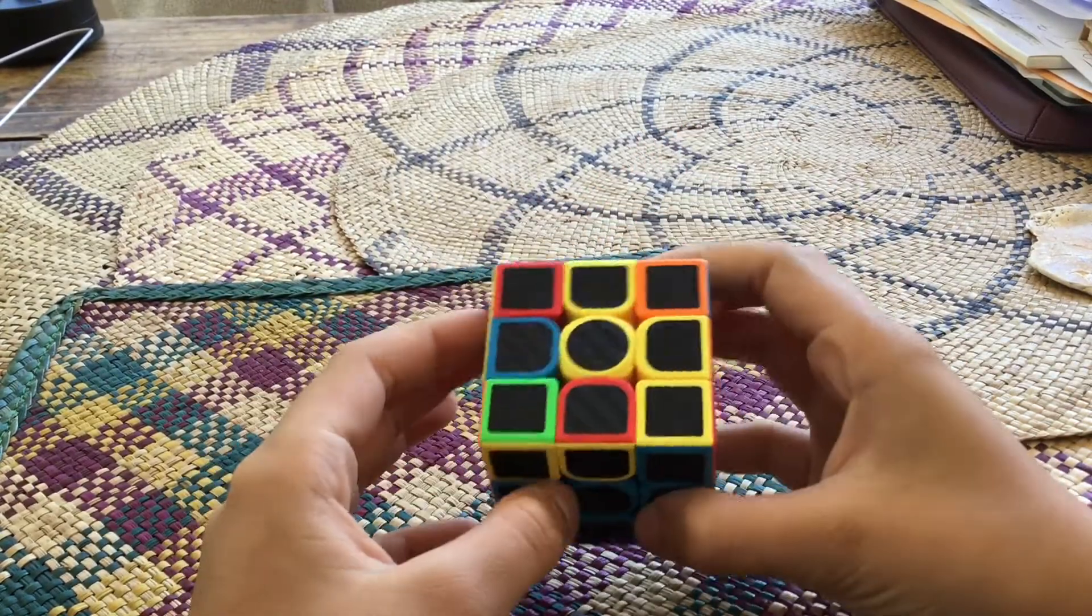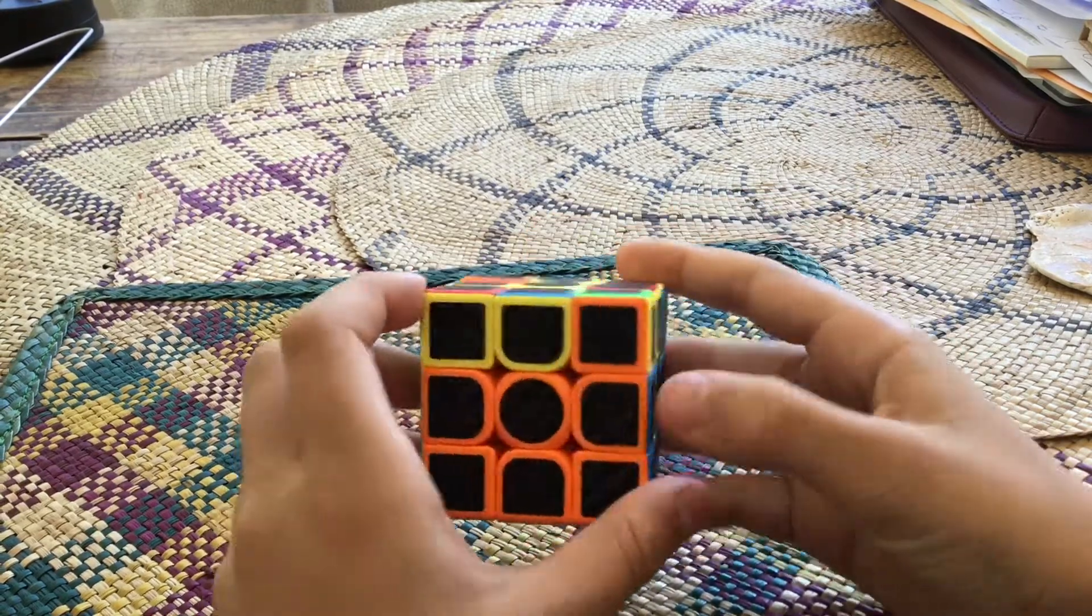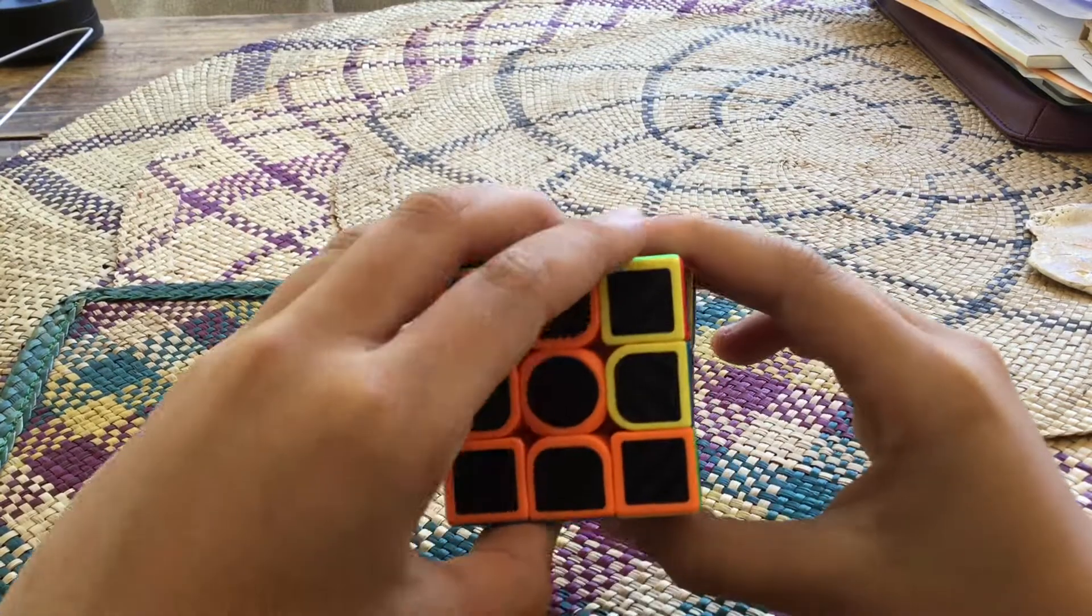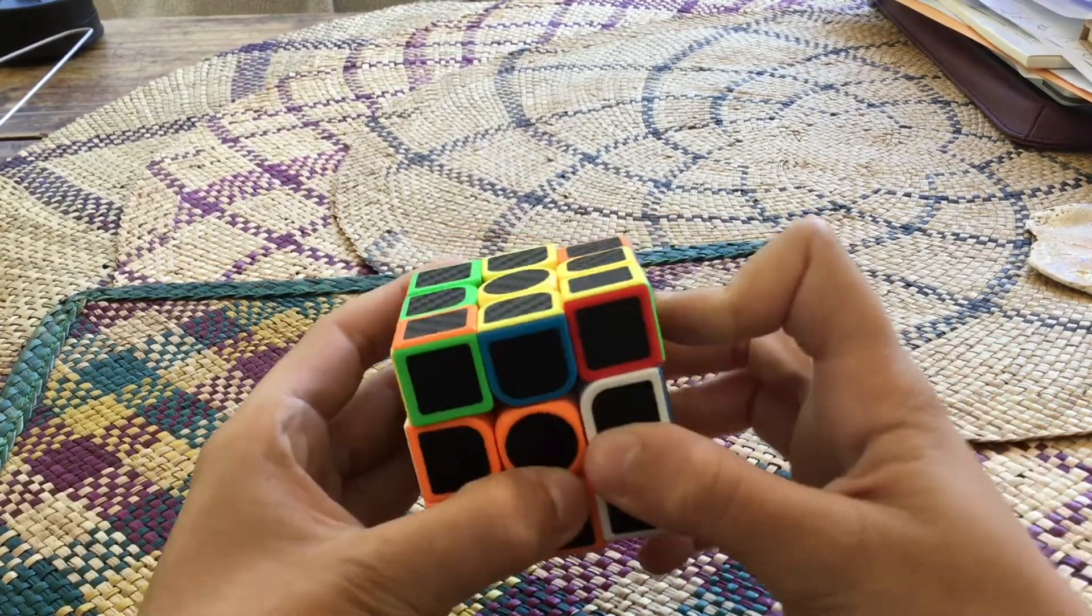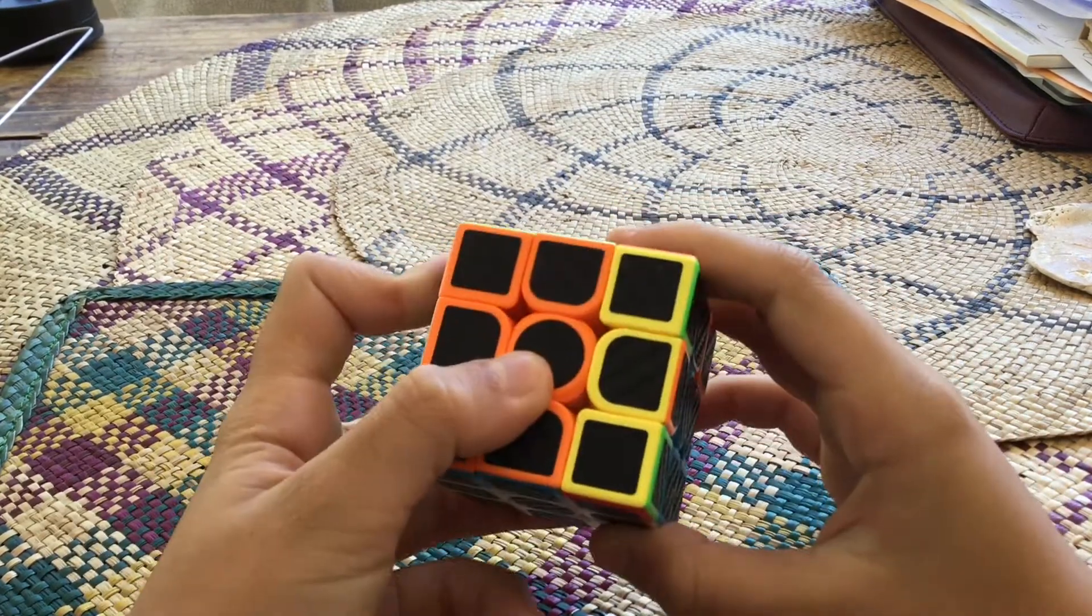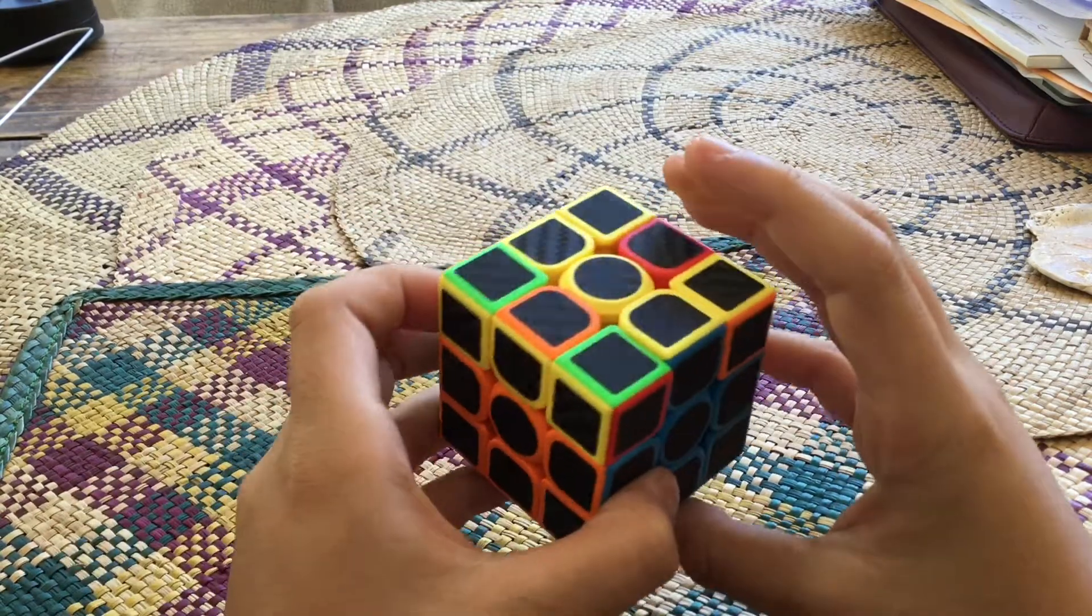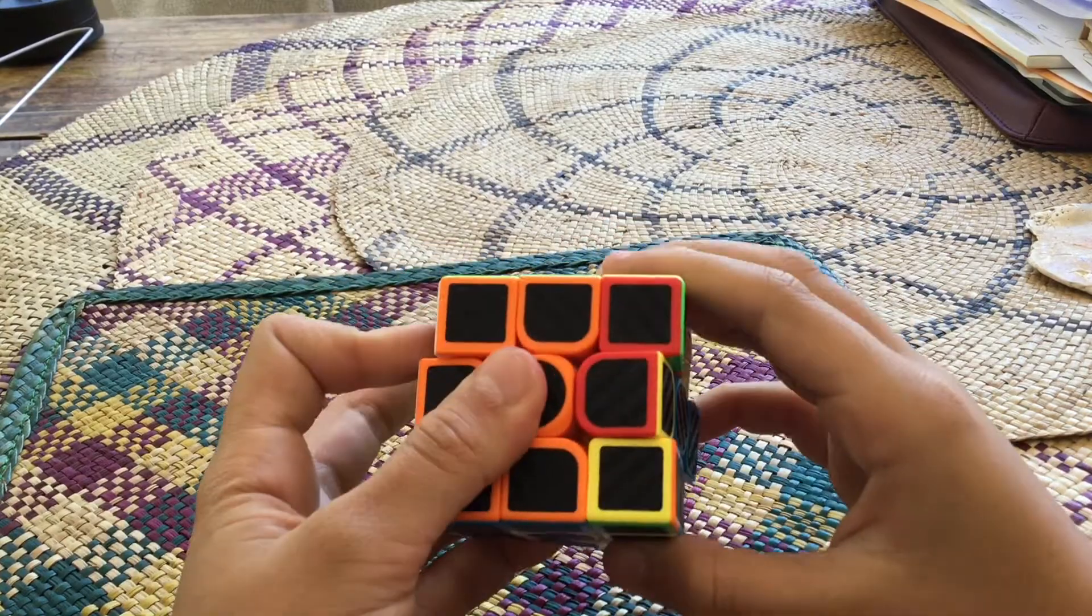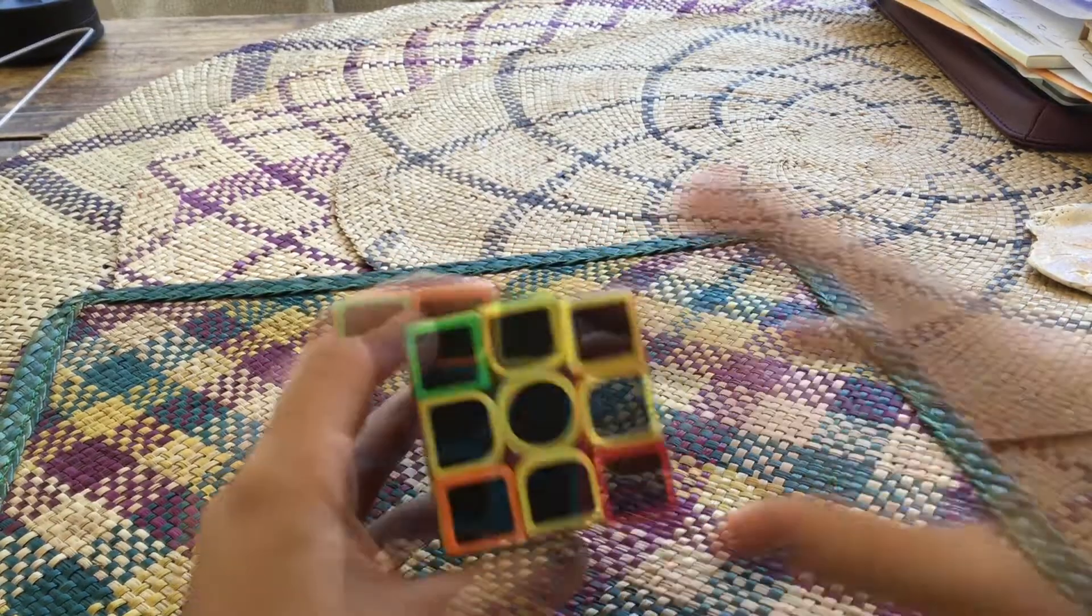Now we're going to do the yellow cross. So you see how there's a yellow middle bit, we're going to do the algorithm in a slightly modified version. So turn it, do that, and sometimes it doesn't turn out at the first bit, so you have to do it again. And there you go, you made a yellow cross.